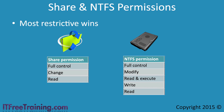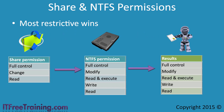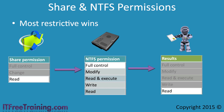Let's consider some examples. In this example, the share permissions are set to read and the NTFS permissions are set to full control. When a user accesses a file on the share, they will be given the read permission, because the most restrictive permission wins, which was read in this case.